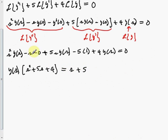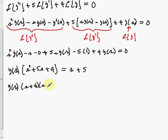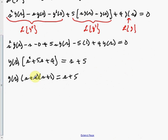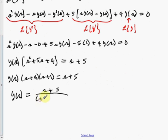So Y(s) times the bracket s squared plus 5s plus 4. What I have left is minus s and minus five, so I get s plus five on the right side. We can factor what's in the bracket, so Y(s) times (s plus 4)(s plus 1) is equal to s plus 5. Dividing both sides by (s plus 4)(s plus 1), we have Y(s) equal to (s plus 5) all over (s plus 4)(s plus 1).